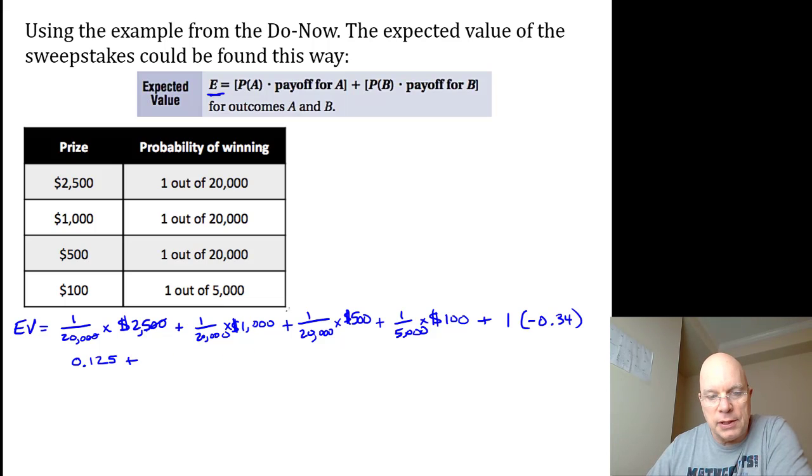This is simply 1 twentieth or 0.05. And if I factor out the hundred hundredths, 5 over 200 is 1 over 40. 1 fourth is 0.25, so 1 fortieth is 0.025.